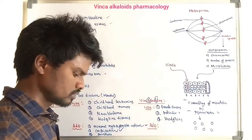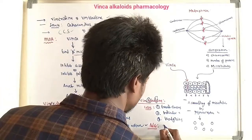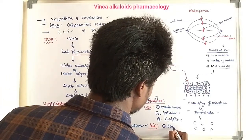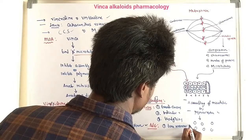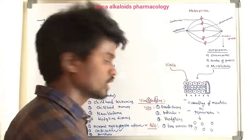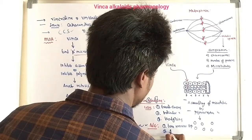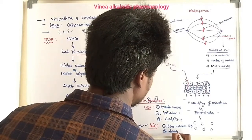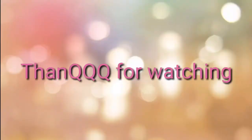The most important adverse effect of Vinblastine is bone marrow suppression. Because of bone marrow suppression, anorexia also occurs. These are the key adverse effects of Vinblastine.